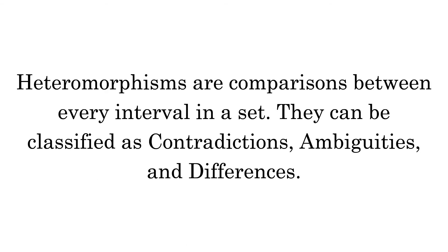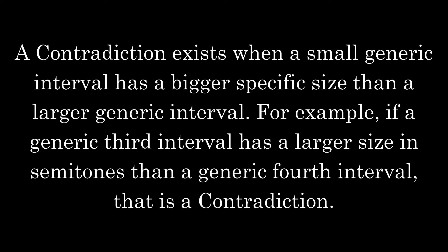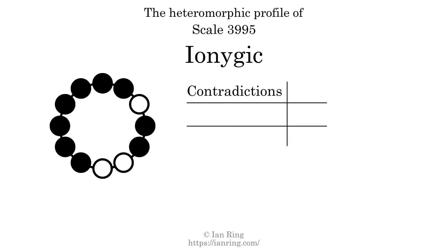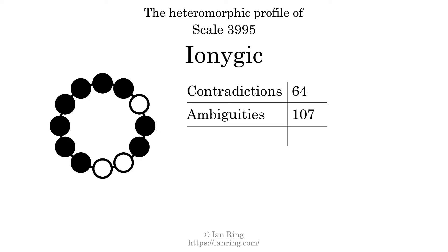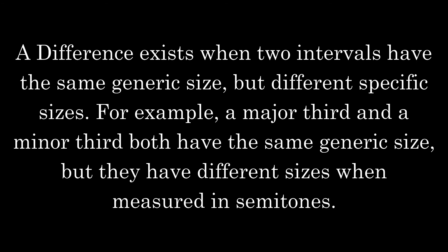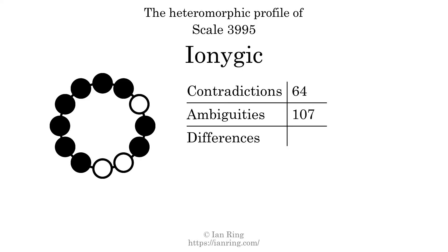Heteromorphisms are comparisons between every interval in a set. They can be classified as contradictions, ambiguities, and differences. A contradiction exists when a small generic interval has a bigger specific size than a larger generic interval — for example, if a generic third interval has a larger size in semitones than a generic fourth interval. The number of contradictions in this scale is 64. An ambiguity exists when two intervals have the same specific size but different generic intervals. The number of ambiguities in this scale is 107. A difference exists when two intervals have the same generic size but different specific sizes — for example, a major third and a minor third. The number of differences in this scale is 194.